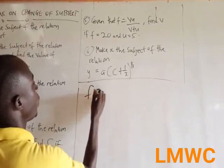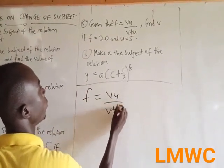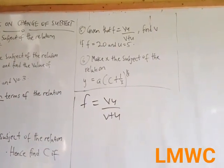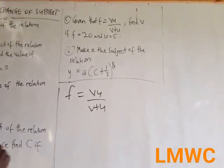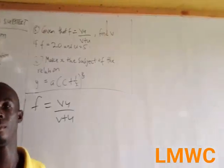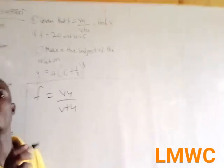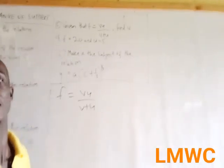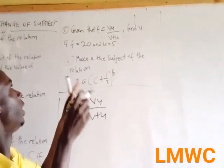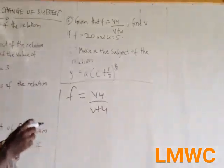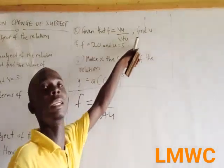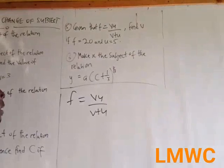Question 5: F = v·u over (v + u). Find v if F = 20 and U = 5. To solve this question, you should first make v the subject of the relation. They should have stated it as: (i) make v the subject of the relation F = v·u over (v + u); (ii) find v if F = 20 and U = 5. They are just trying to trick you — it is not difficult.